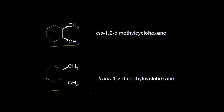Here we have two compounds that would both be called 1,2-dimethylcyclohexane. The top one has two methyl groups going up in space, or coming out at us, so those two methyl groups must be on the same side of the ring, and we call that cis. For the other one, we have one methyl group with a wedge and one methyl group with a dash, so those two methyl groups are on opposite sides of the ring, and we call that trans. We're going to look at the cis-1,2-dimethylcyclohexane compound and draw both chair conformations, then we'll look at the trans.